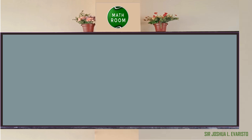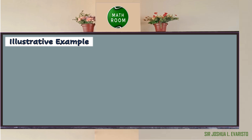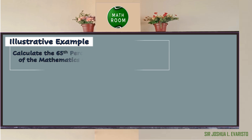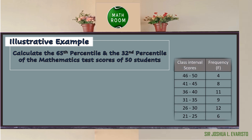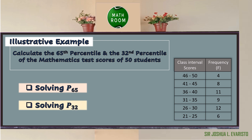For you to understand this, let's have an illustrative example. Calculate the 65th percentile and the 32nd percentile of mathematics test scores of 50 students using the given frequency table. We are going to solve P65 followed by P32. Okay, let's start solving the 65th percentile.